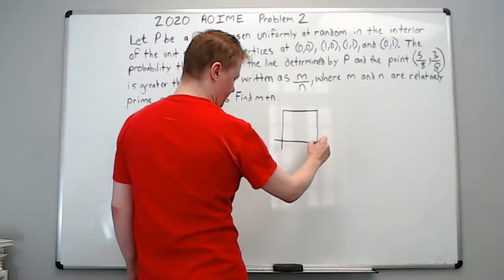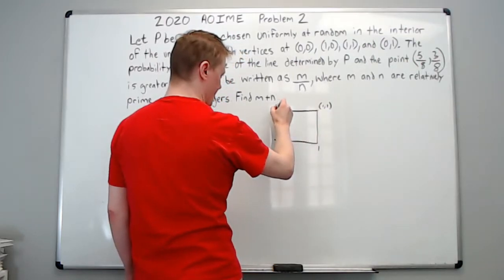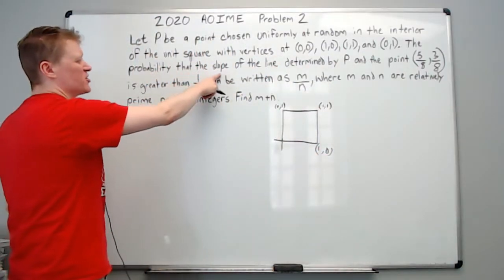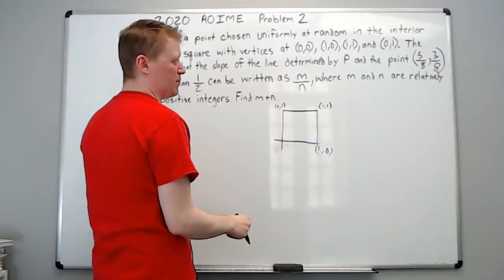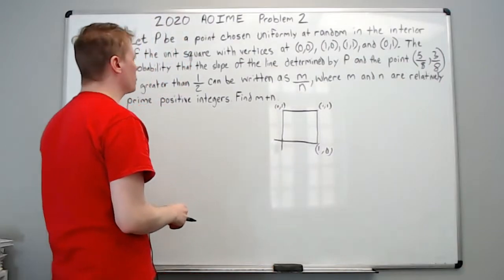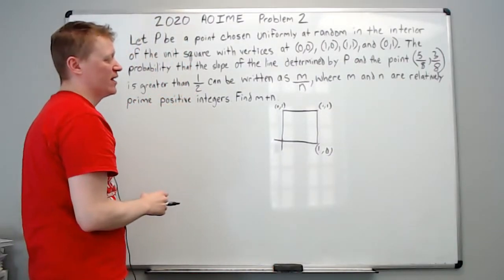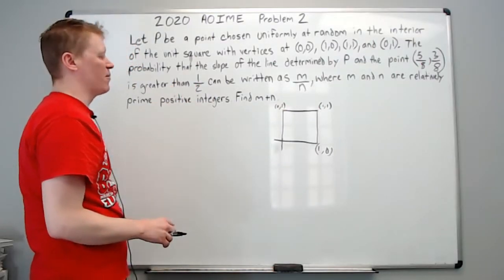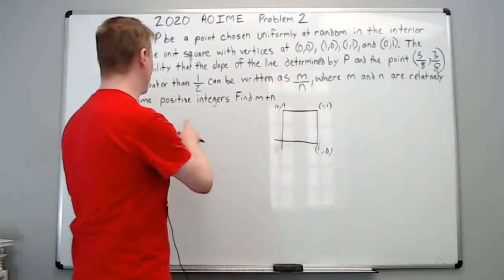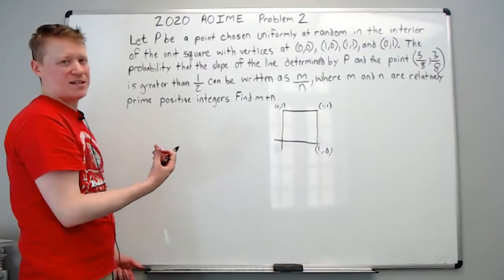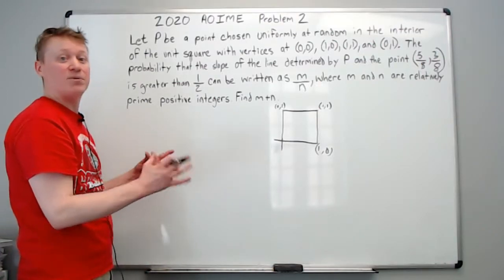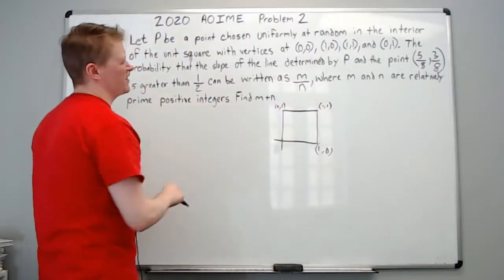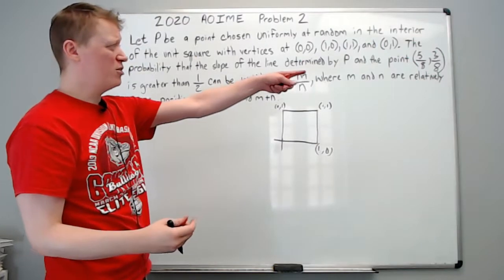Find the probability that the slope of the line determined by P and the point (5/8, 3/8) is greater than one half. The probability can be written as m over n where m and n are relatively prime positive integers — that means no common factors. We need to find that probability, then find m plus n at the end. Let's look for a line through (5/8, 3/8) with slope one half.